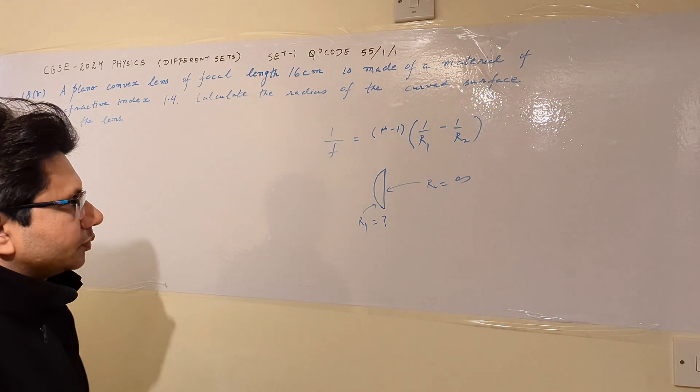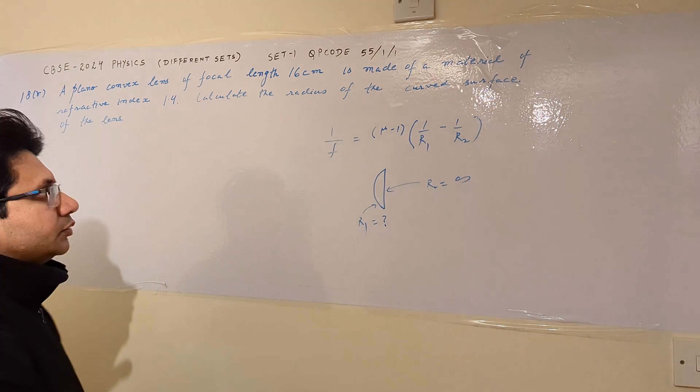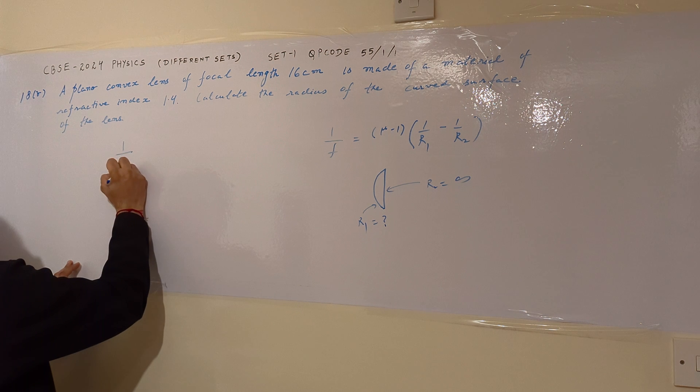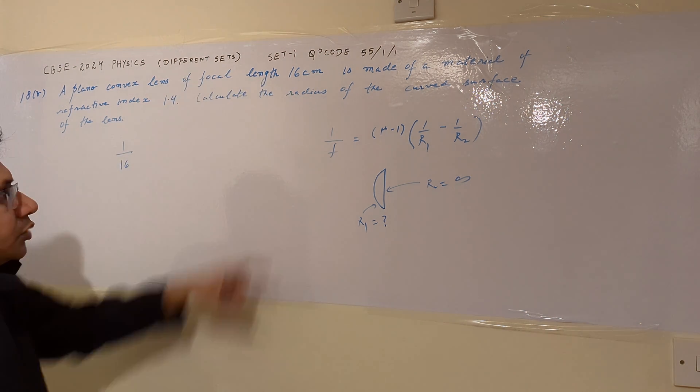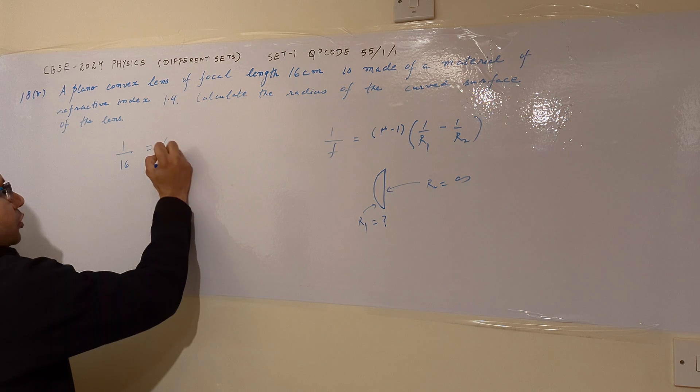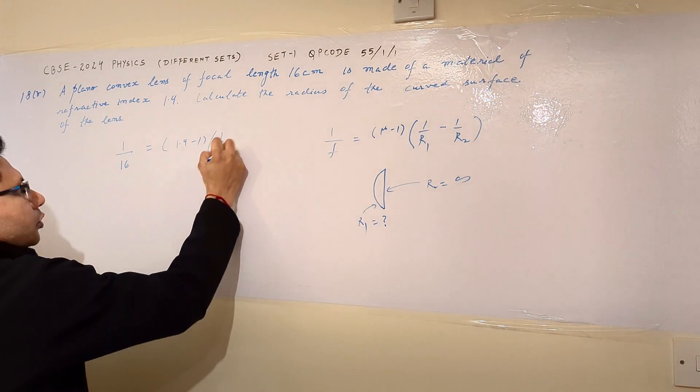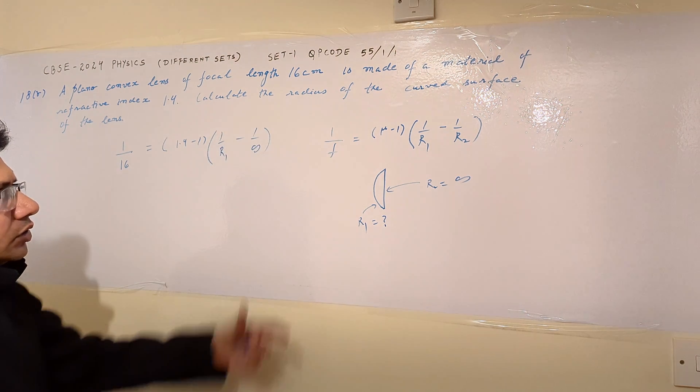f is the focal length and mu is the refractive index. After putting the respective values: 1 upon f means 1 upon 16 centimeters. This equals mu minus 1, which is 1.4 minus 1, times 1 upon r1 minus 1 upon infinite.